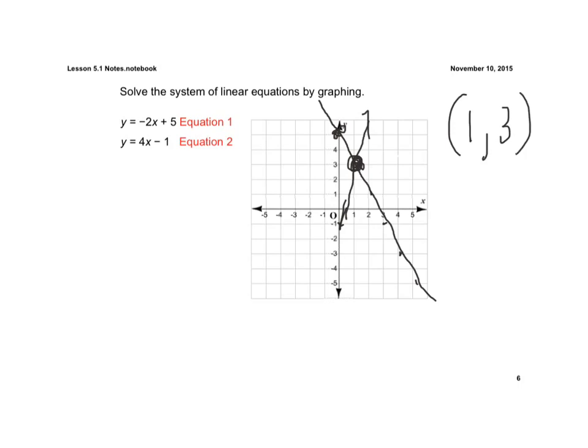We should check that to make sure. We substitute 3 in for y: negative 2 times 1 plus 5. That gives negative 2 plus 5 is 3. 3 equals 3, and that checks. Now for the second equation: 3 equals 4 times 1 minus 1. 4 minus 1 is 3. 3 equals 3, and that checks.